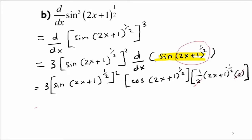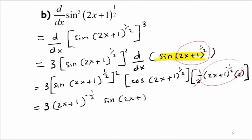Rearranging the whole expression, we have 3 multiplied by (2x + 1)^(−1/2), then sin(2x + 1)^(1/2) raised to the power of 2 — which we write with the square brought in — multiplied by cos(2x + 1)^(1/2). This is the final answer.